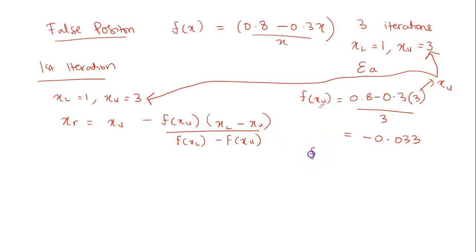So next one calculate our f(x_l) which is again substitute in the function 0.8 minus 0.3 and x here it should be the x_l. And x_l is 1. So 1 divided with 1. So you will get 0.5.